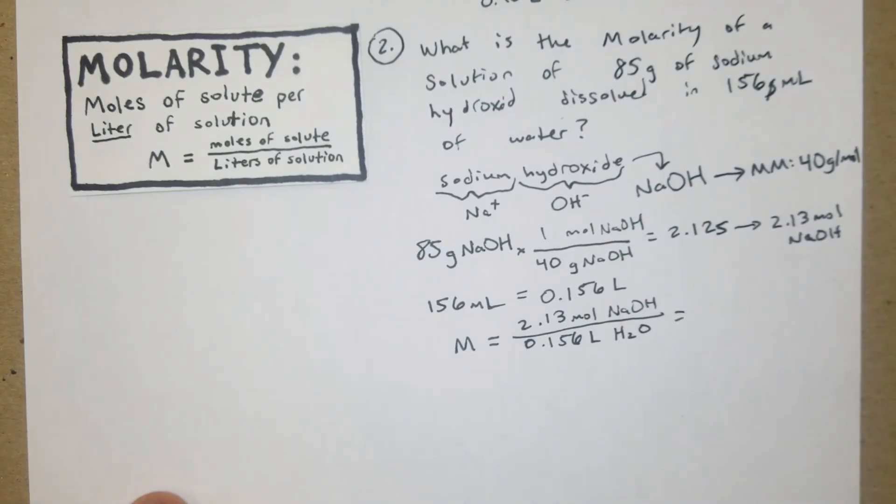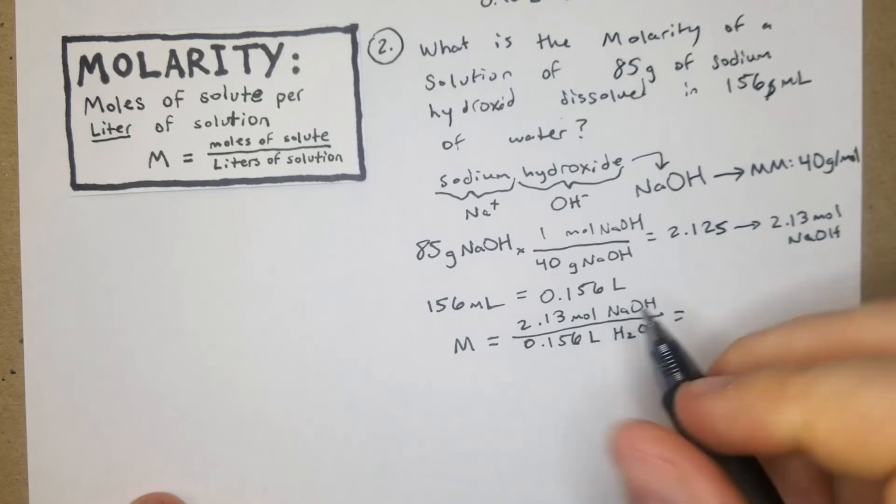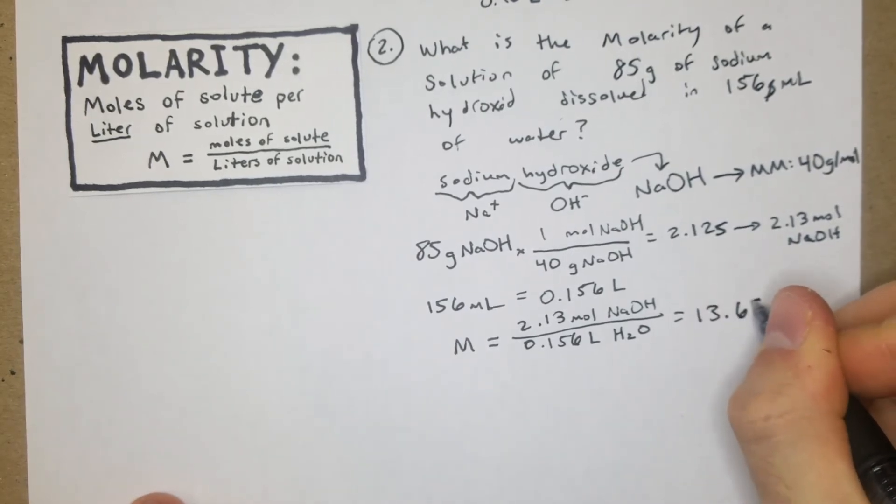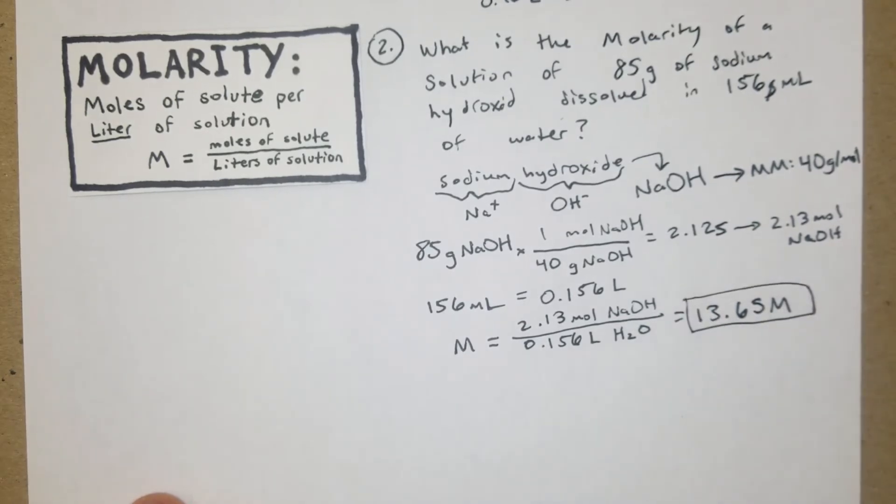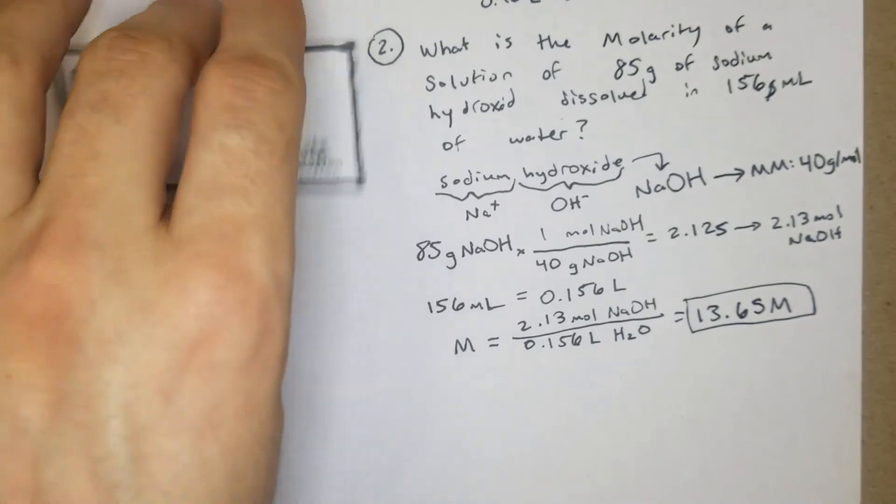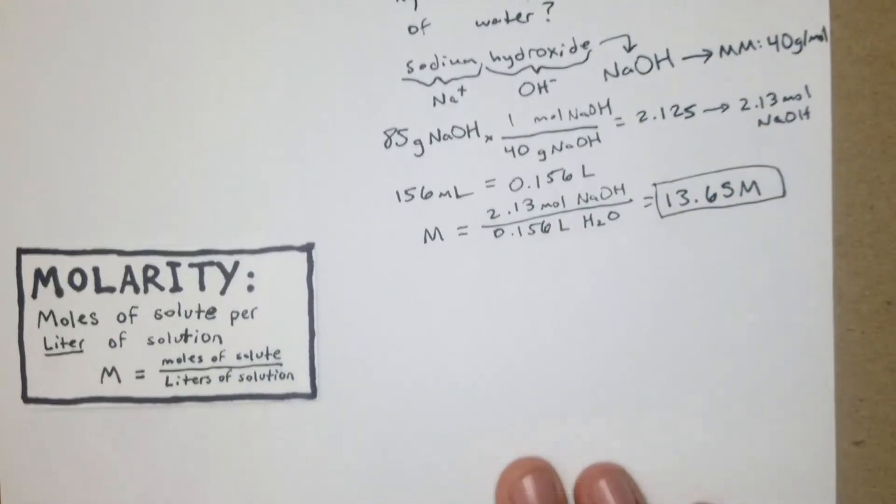We're just going to divide that: 2.13 divided by 0.156 equals around 13.65 M. So that's going to be the molarity of that. Now I'll move this down, we'll do one more.